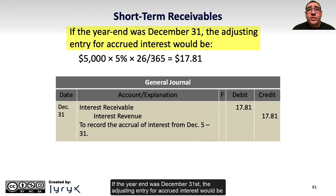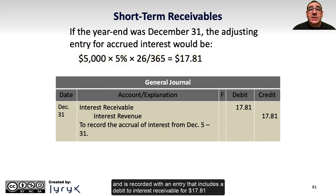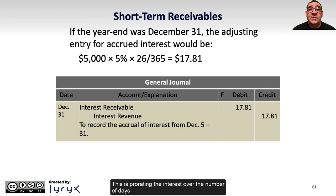If the year-end was December 31st, the adjusting entry for accrued interest would be $5,000 times 5% times 26 days divided by 365 days, which equals $17.81. This is recorded with a debit to interest receivable for $17.81 and a credit to interest revenue for the same amount — prorating the interest from when the note was taken out to the end of the year.